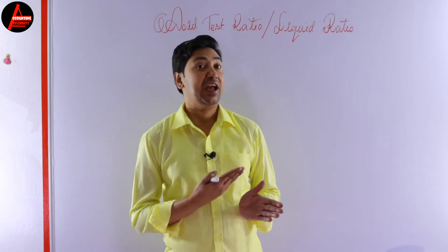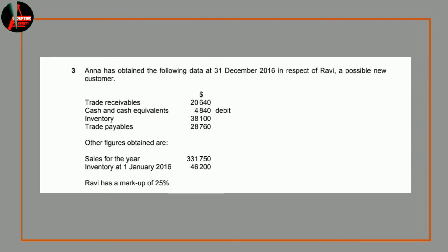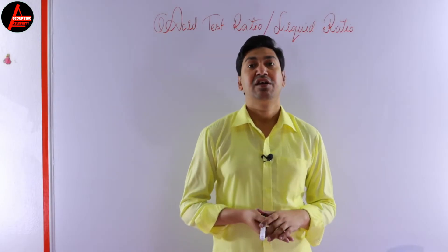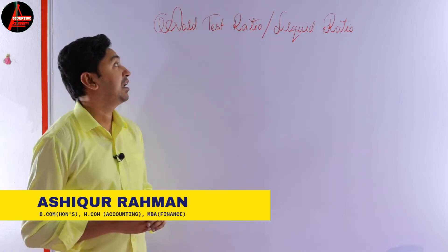Before we get into this lesson, let us have a look at the question on the screen. Anna has obtained the following data at 31st December 2016 in respect of Robin, a possible new customer. So there are some items given in the question: trade receivables, cash and cash equivalents, inventory, trade payables, sales for the year, and inventory with a markup of 25%. From this information we will calculate our liquid ratio.